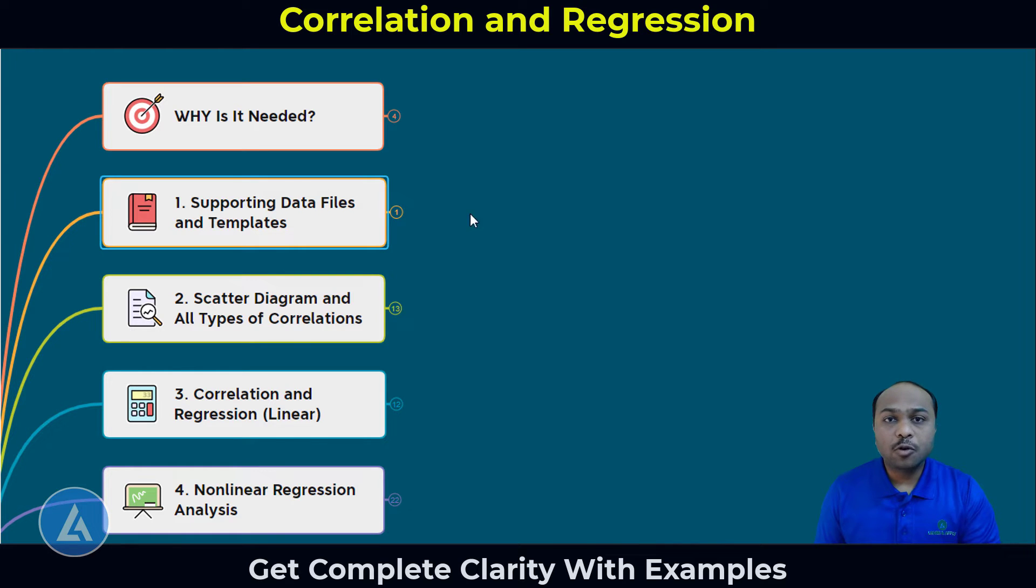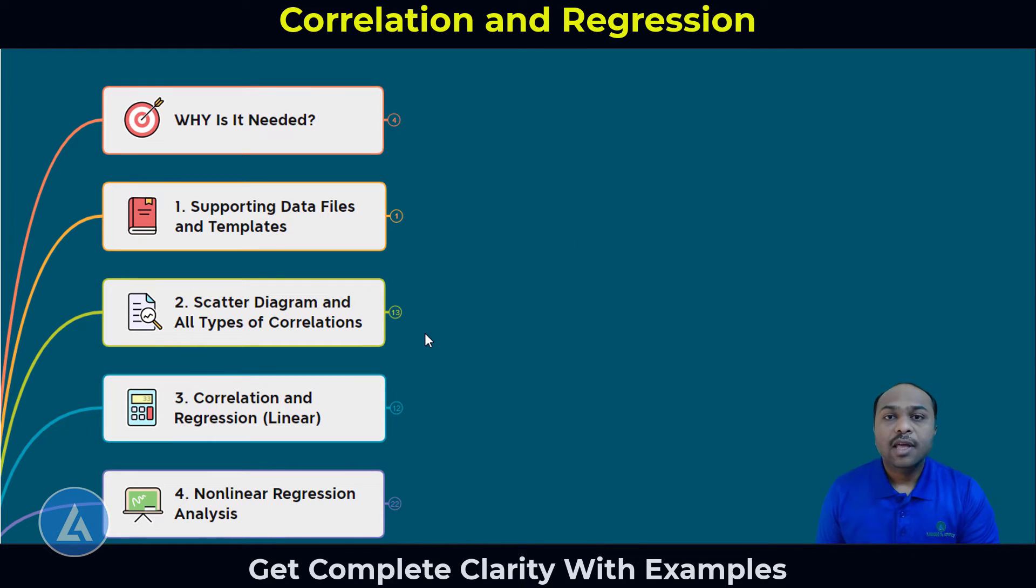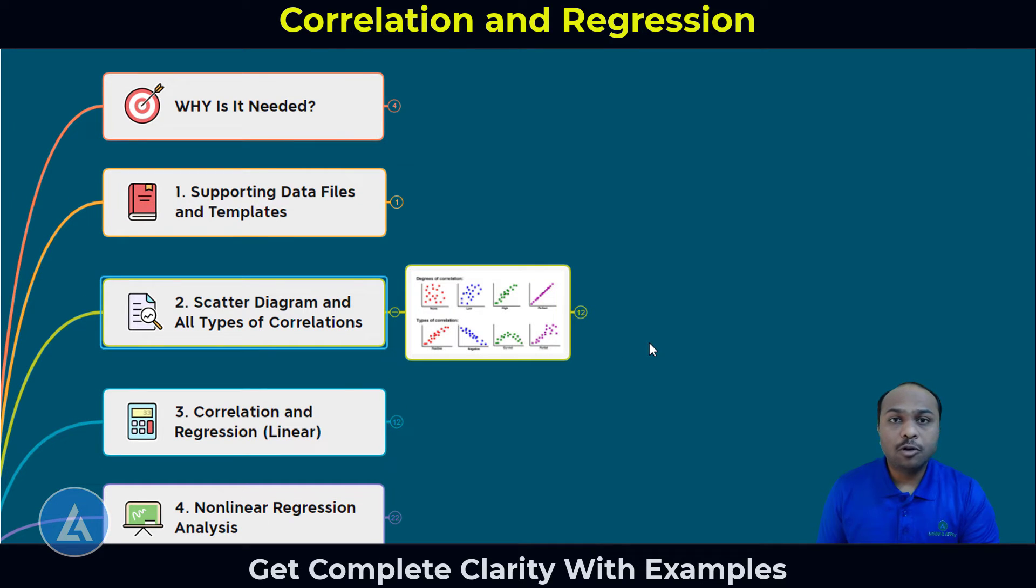The first section of this course consists of supporting data files and templates for performing all the tools and techniques that we are going to see in this course. In the second section of this course, you are going to learn one of the most important tools and that is a scatter diagram. This is very important tool to understand the relationship between two continuous variables. And we are also going to understand what are the different types of correlations, whether it is positive correlation, negative correlation, or there is no correlation depending on the shape of this diagram.